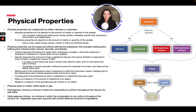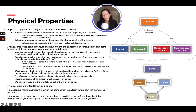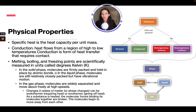A heterogeneous mixture has a non-uniform composition throughout — for example, vegetable soup where each spoonful contains a different amount of ingredients. If only one substance is present, it is either an element or compound, which can be in solid, gas, or liquid phase. If more than one substance is present, it can be a homogeneous or heterogeneous mixture.